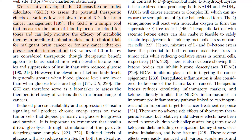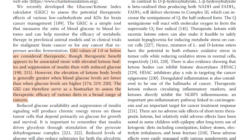We recently developed the glucose ketone index calculator (GKIC) to assess the potential therapeutic effects of various low-carbohydrate and ketogenic diets for brain cancer management. The GKIC is a simple tool that measures the ratio of blood glucose to blood ketones, and can help monitor the efficacy of metabolic therapy in preclinical animal models and in clinical trials for malignant brain cancer, or for any cancer that expresses aerobic fermentation. GKI values of 1.0 or below are considered therapeutic, though therapeutic benefit appears to be associated more with elevated ketone bodies and suppression of insulin than with reduced glucose. The GKI can therefore serve as a biomarker to assess the therapeutic efficacy of various diets in a broad range of cancers.